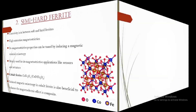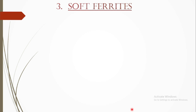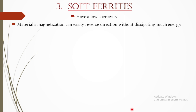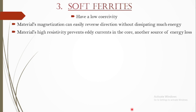The third type is soft ferrite. Based on the name, it has a low coercivity — soft ferrites can be easily demagnetized and easily change their magnetization, acting as magnetic field conductors. The magnetization of soft ferrite materials can easily reverse direction without dissipating much energy. In a lesser amount of applied magnetic field or force, the material can be demagnetized. Their high resistivity also prevents eddy currents in the core, which is another source of energy loss.